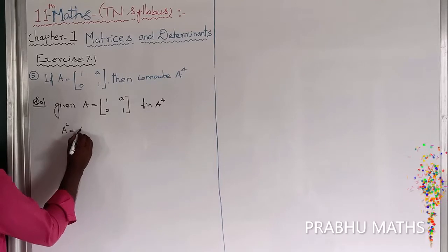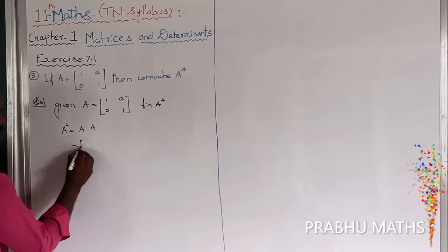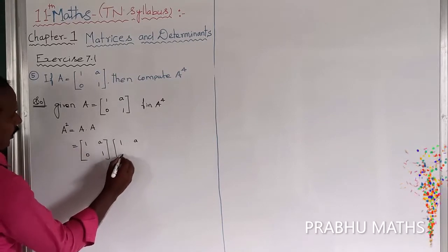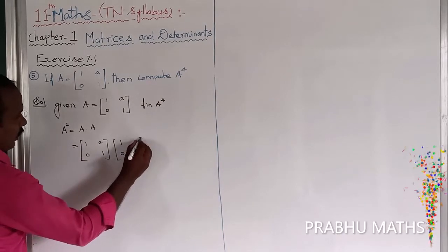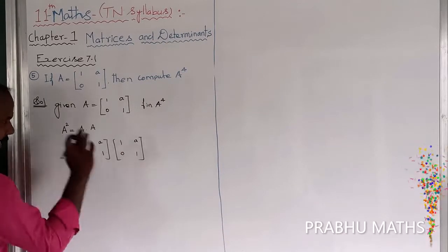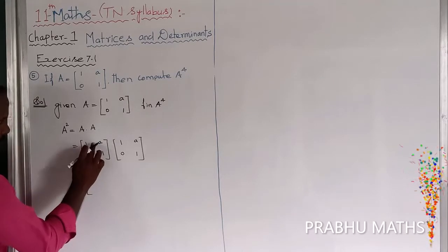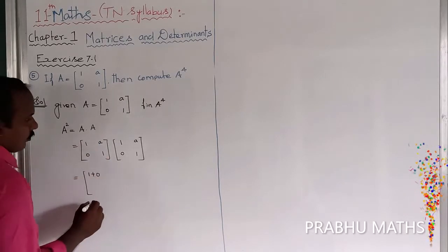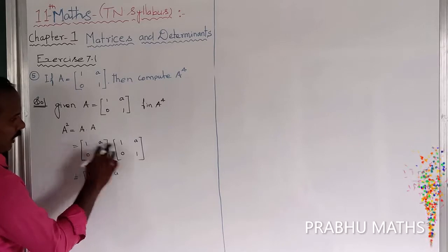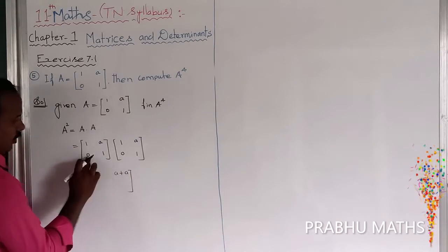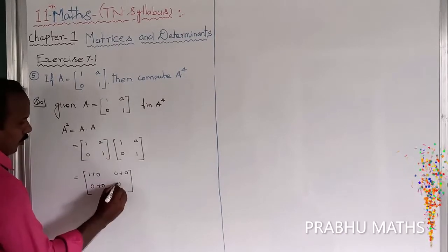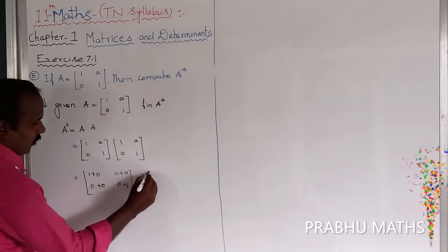A square is equal to A into A. So that is equal to [[1, a], [0, 1]] into [[1, a], [0, 1]]. First row first column: 1 into 1 plus 0 into 0 is 1. First row second column: 1 into a plus a into 1 is 2a. Second row first column: 0 into 1 plus 1 into 0 is 0. Second row second column: 0 into a plus 1 into 1 is 1.